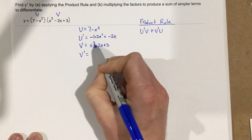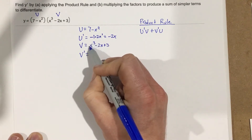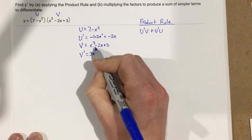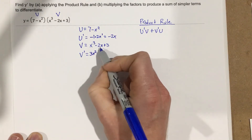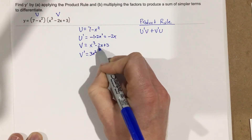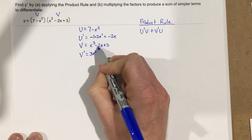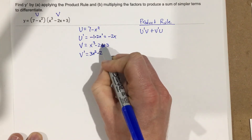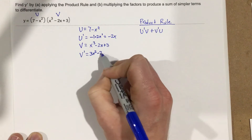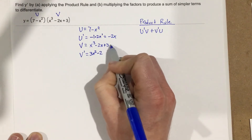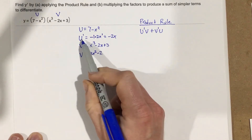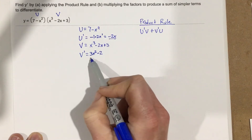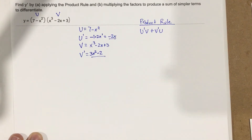For v prime, the derivative of x cubed minus 2x plus 3: bring the power to the front, giving 3x squared. The derivative of negative 2x brings the 1 to the front giving minus 2. The derivative of the constant 3 cancels. So v prime equals 3x squared minus 2.